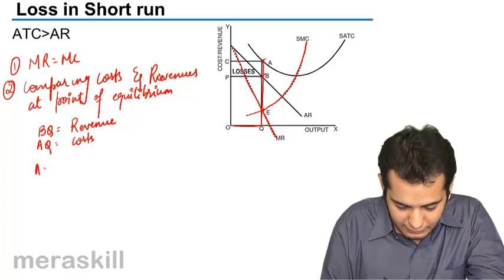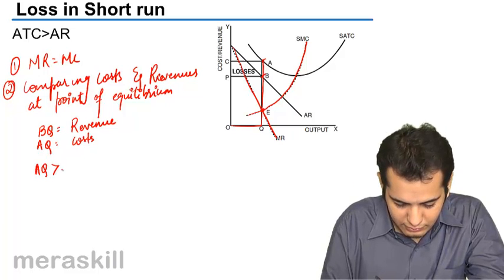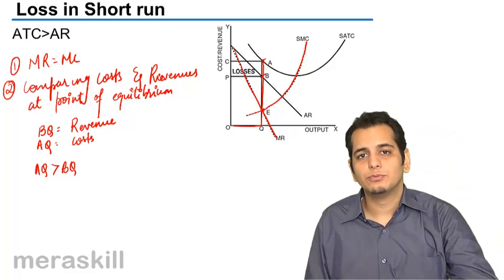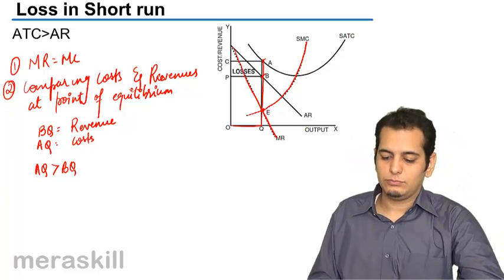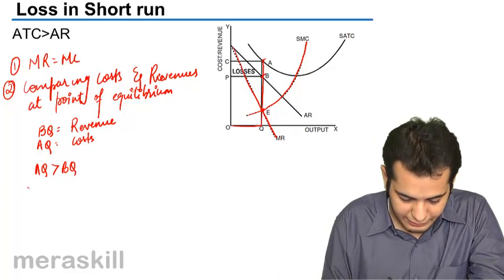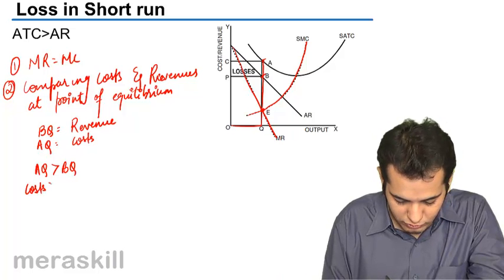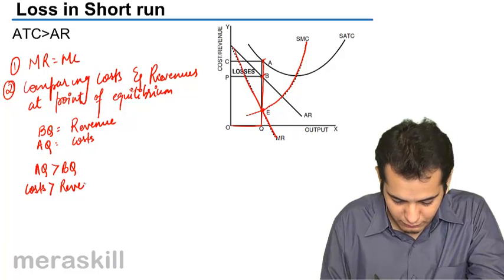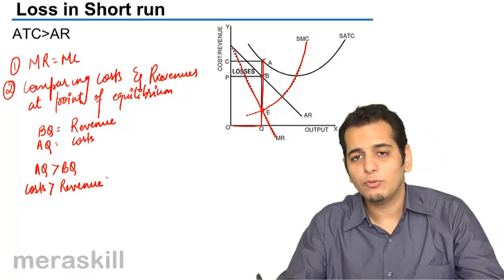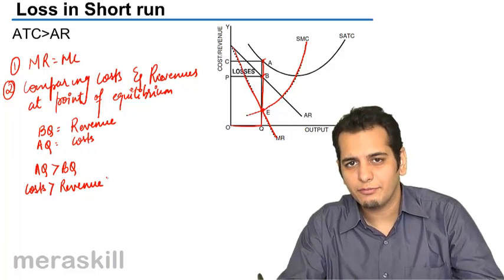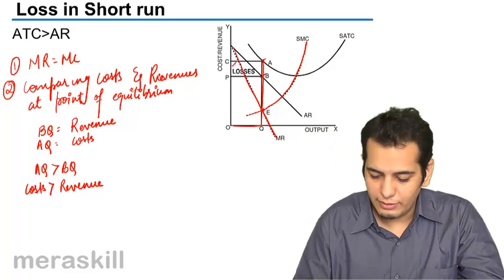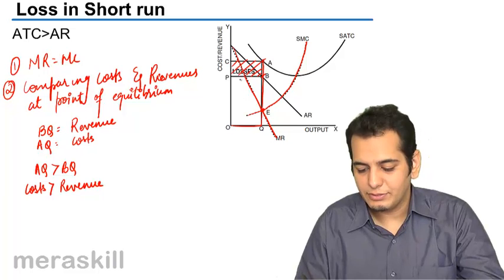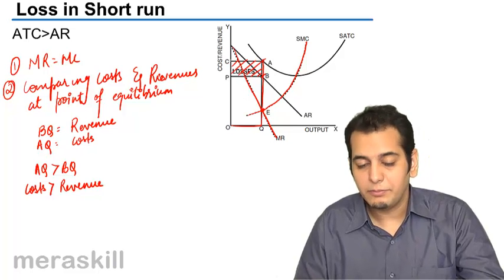I can see that AQ is greater than BQ. Thus cost is greater than revenue. And we all know if cost is greater than revenue, you will have a case of losses which is shown by this rectangle ABPC.